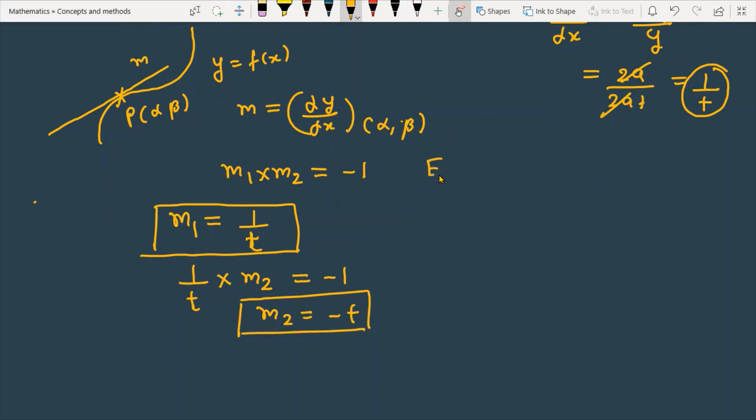Now for the equation of tangent, I'm using the slope-point form which is y - y₁ = m(x - x₁). The point is (at², 2at) and the tangent slope is 1/t. So the equation is y - 2at = (1/t)(x - at²).